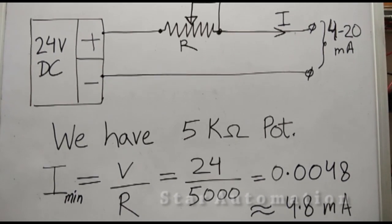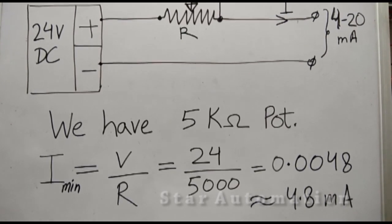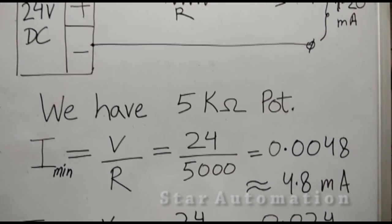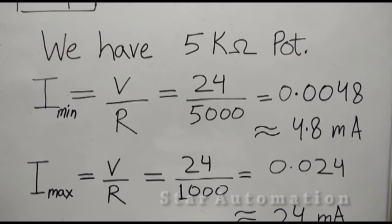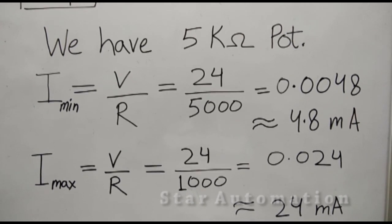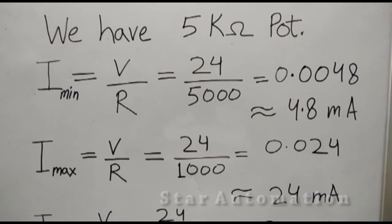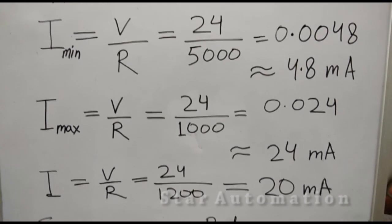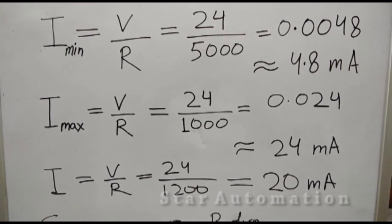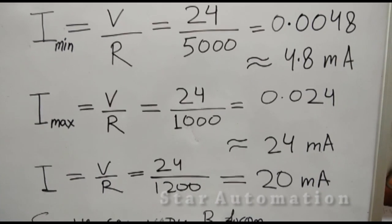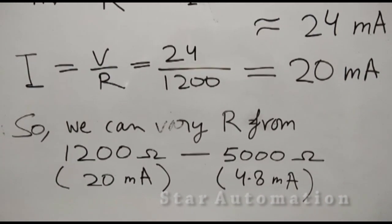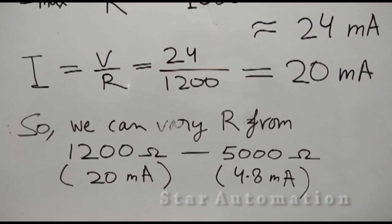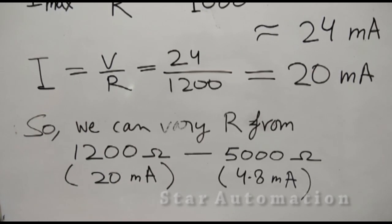Let us do some calculations. We have Ohm's law: V is equal to IR, so I is V divided by R. I minimum is 24 volts divided by 5000 ohm, which gives 0.0048, that is 4.8 mA. Similarly, I max is 24 divided by 1000, that is 24 mA. So R should be 1200 ohm to get 20 mA, and we can vary R from 1200 ohm to 5K.